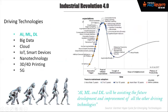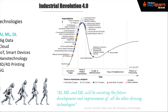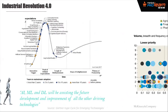If you search for Gartner's Hype Cycle of emerging technologies, you'll see many technologies including deep learning, machine learning, and connected home. One thing is evident: AI, ML, and deep learning will assist all other future developments. You can be a great cloud or IoT engineer, but you get the highest efficiency when you combine those with AI and ML.